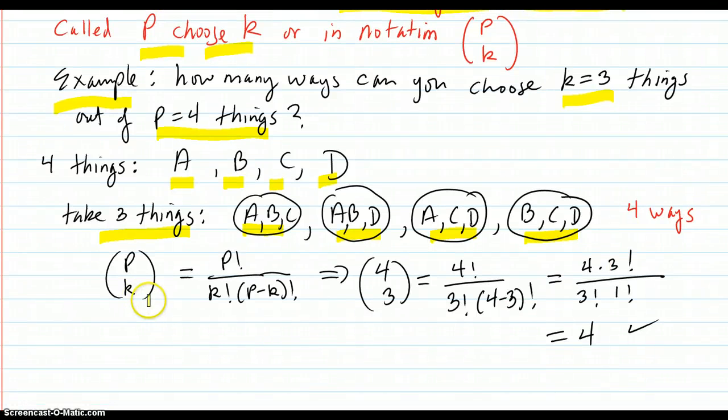And let's do that with this notation. p choose k. p factorial over k factorial times p minus k factorial. That's the definition of p choose k. It's also our binomial coefficients for our binomial series. So that's p is 4. k is 3. 4 choose 3. That's p factorial over k factorial, p minus k factorial. That's 4. 4 factorial is 4 times 3 factorial. Just doing that so we can cancel with the 3 and get 4. And there's 4 ways to do it, so it matches up.